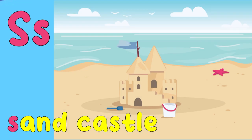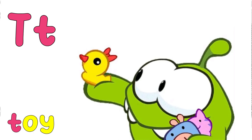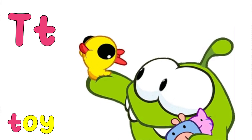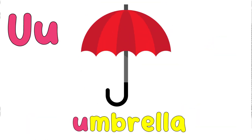S is for sandcastle, s, s, s. T is for toy, t, t, t. U is for umbrella, ah, ah, ah.